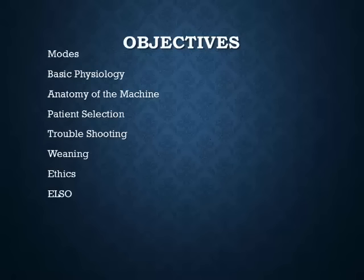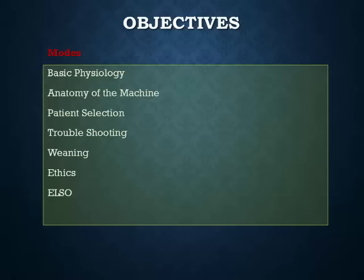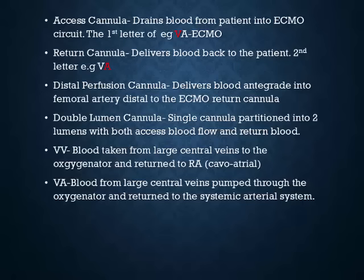Some of the things we're going to be talking about today are modes, basic physiology, and anatomy of the machine itself. I'm going to very briefly touch on patient selection. Troubleshooting is where we'll spend most of our time, along with a little bit on weaning, ethics, and the ELSO organization.